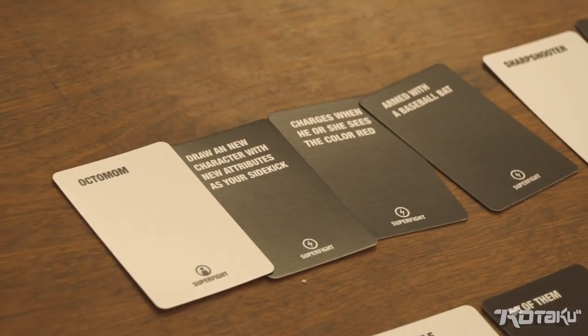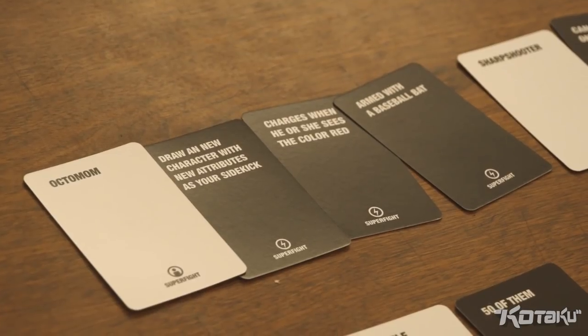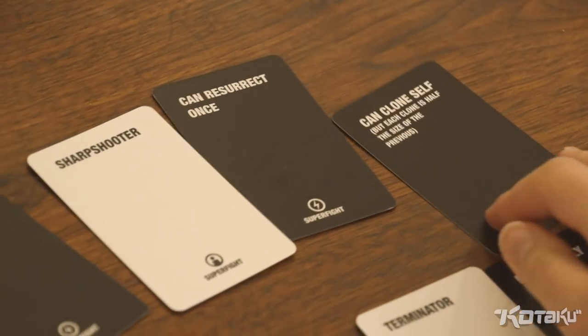I'm fighting Octomum with a sidekick. Okay, the baseball bat? Yeah. And charges when she sees the color red. And the sidekick is a sharpshooter who can resurrect once and can clone himself as many times as he wants, but each clone is half the size of the previous one. I clearly win. What? There's 50 of me. Like, how many people do the sharpshooter kill before I take out the sharpshooter?